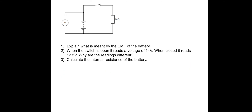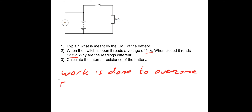Next question: when the switch is open the voltmeter reads 14 volts, and when closed it reads 12.5 volts — why are the readings different? Work is done to overcome the internal resistance of the power supply, so we lose voltage, or 'lost volts', due to internal resistance.